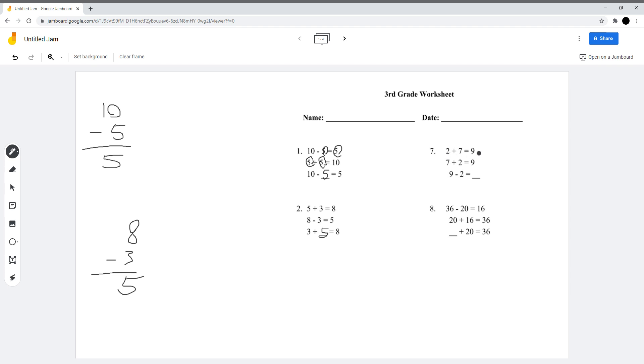2 plus 7 is 9, 7 plus 2 is also 9, 9 minus 2 is 7. 36 minus 20 is 16, 20 plus 16 is 36, what plus 20 is 36? 16 plus 20 is 36.